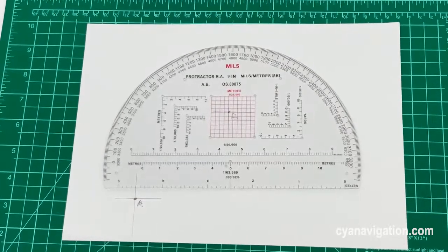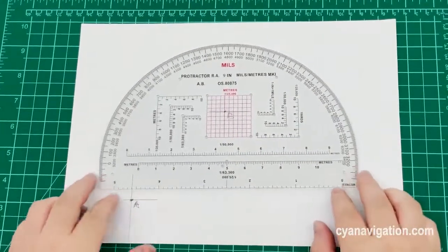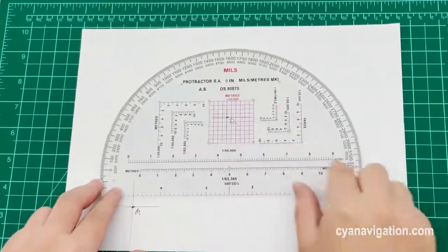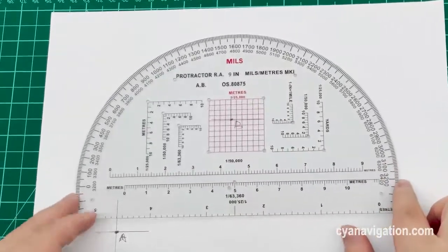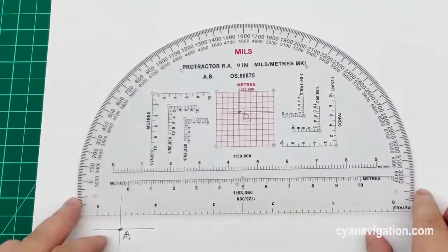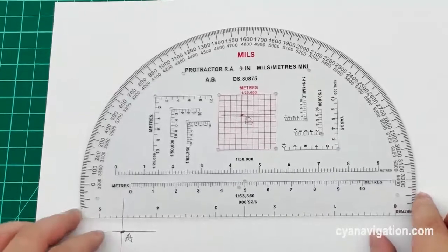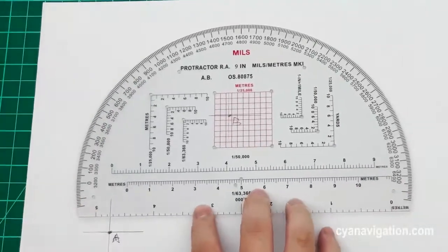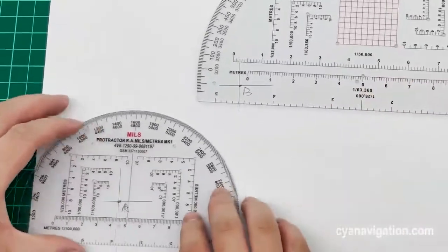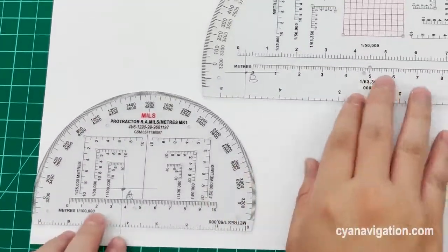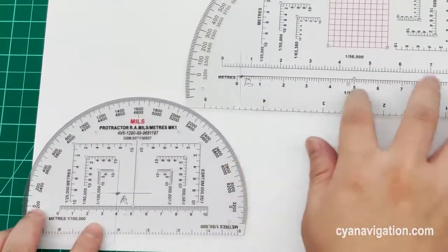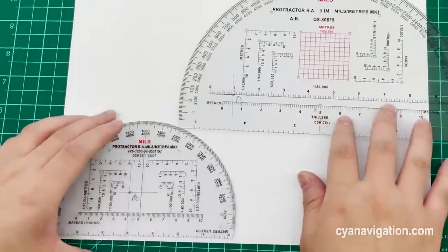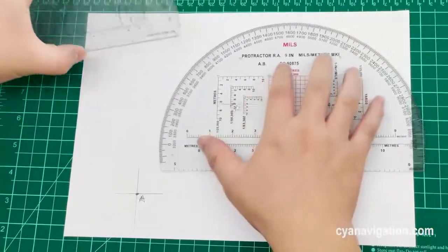Hello, in this video we will show you this map protractor with 9-inch size. It is mainly used for military soldiers and armies training for map reading. When we compare it with the regular 6-inch size protractor, we can see it is much bigger, so the numbers and printings here are much easier to read.